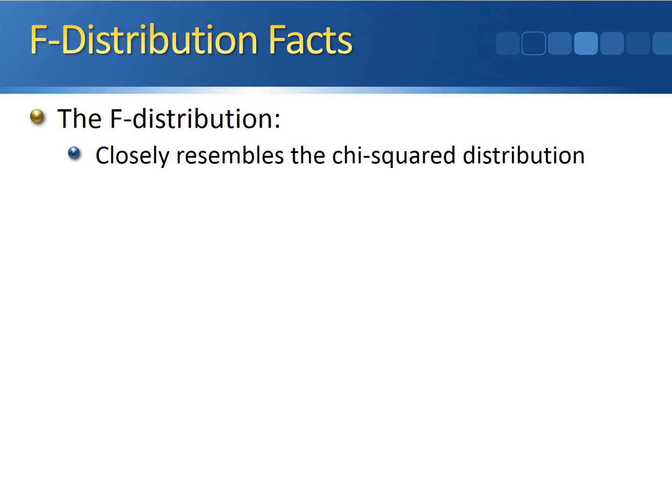However, I do want you to have a sense for what's going on with the F-distribution, so here are a few facts. The F-distribution closely resembles the chi-squared distribution, primarily because they're both used for variances.